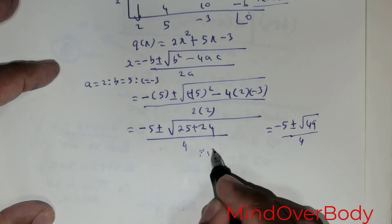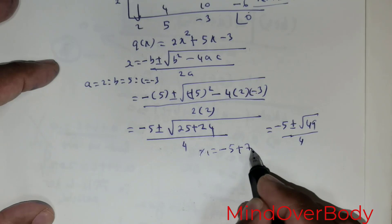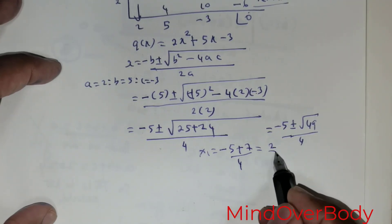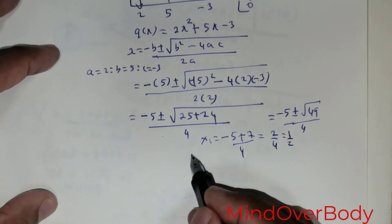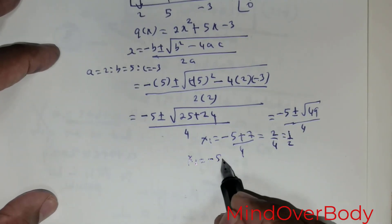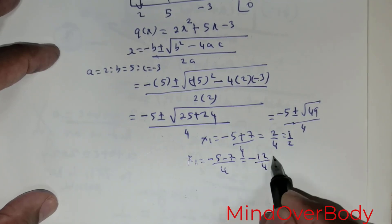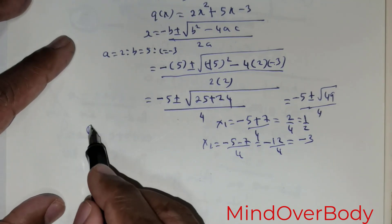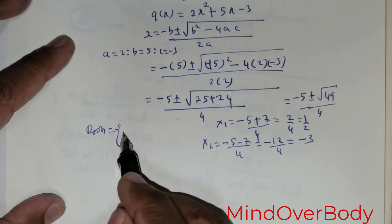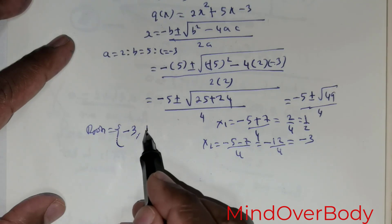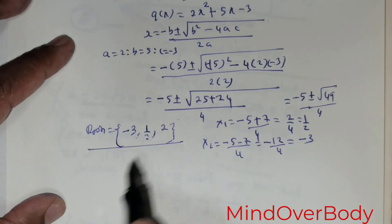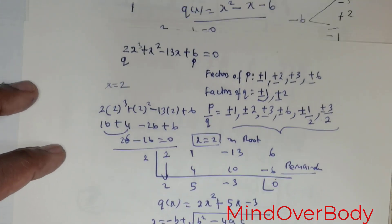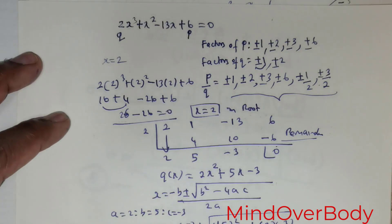So x₁ equals negative 5 plus 7 over 4, which is 2 over 4, giving one-half. And x₂ equals negative 5 minus 7 over 4, which is negative 12 over 4, giving negative 3. The roots are x equals negative 3, x equals one-half, and x equals 2. This is the solution set for method 3.